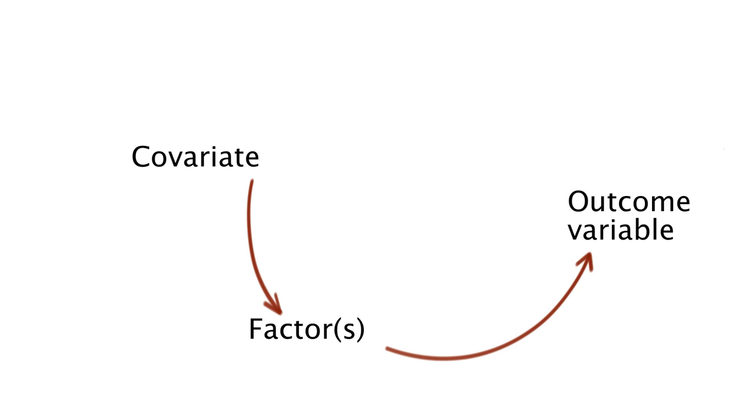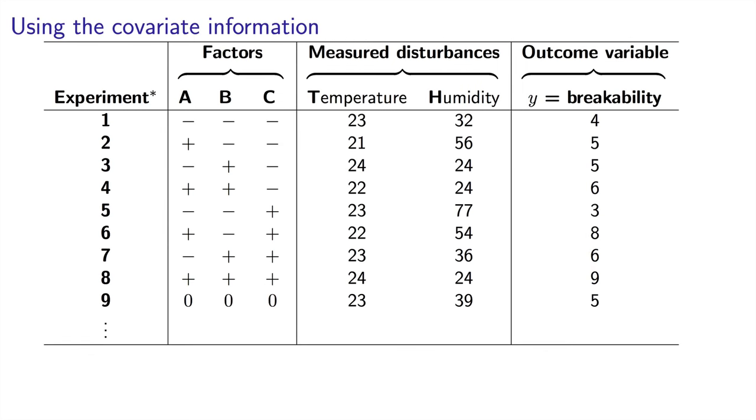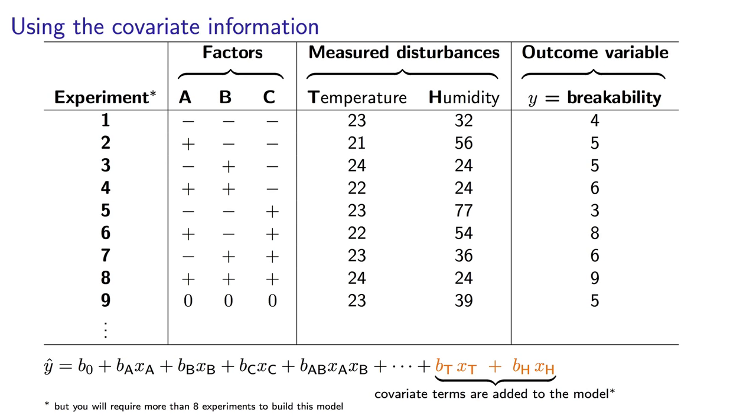You can use this extra information from the covariates in two ways. Firstly, the most simple way is to simply use them to understand unusual results after the fact. If one of your experiments had, for example, an unusually low outcome value, the reason might be due to a covariate. The second way we could use it, for those of you that have an understanding of least squares, is we can add these covariates as additional regression variables in our model to separate out their effect.